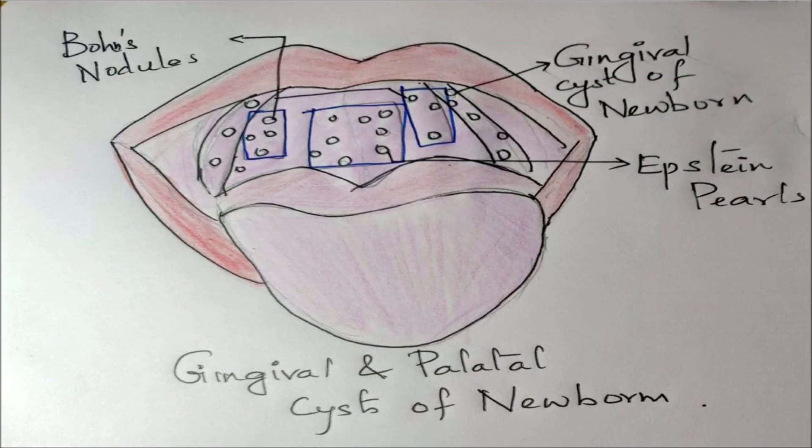This picture shows the different positions of these gingival and palatal cysts of newborn. In the middle portion of the palate you can see the Epstein pearls; along the lingual aspect of the palate are the Bohn's nodules; and along the alveolar process the gingival cyst of newborn is seen.